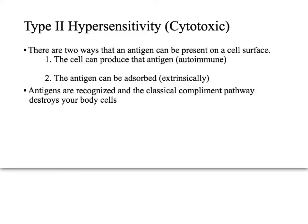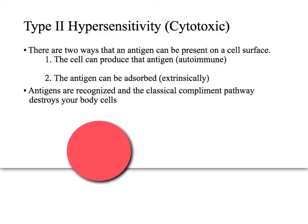In type 2 hypersensitivity, you have a normal cell — for example, a red blood cell — with an antigen on its surface. There are two ways this can happen. First, it could be a normal component of the cell that your body accidentally started creating antibodies against — an autoimmune process. Second, it could be attached from somewhere else extrinsically, as penicillin is well known for binding readily to red blood cells.